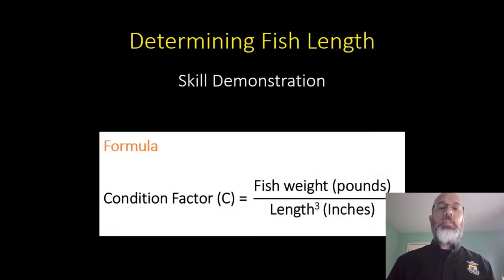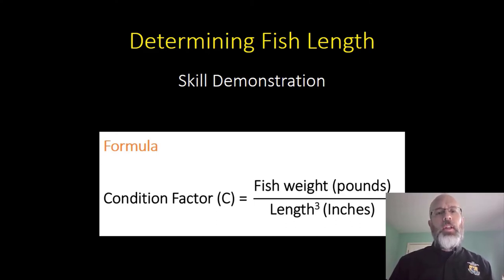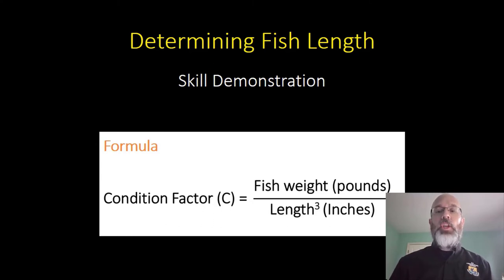Condition factor is different for every species. It also can be different within a species at different hatcheries. If you want to calculate your own condition factor for a given species at your hatchery, you would take a sample of 100 to 150 fish, weigh those fish, and then divide the fish weight by the average length cubed in inches to get your condition factor.